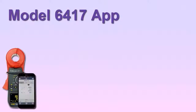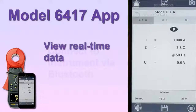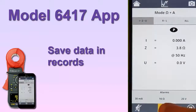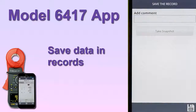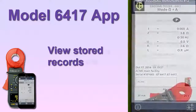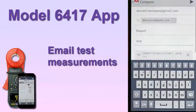The Ground Tester 6417 app enables users to connect to a Model 6417 via Bluetooth. Once connected, you can view data currently being measured by the instrument in real-time, save measurement data in a record on the instrument, view previously stored data records, change configuration settings on the instrument, and email test results.